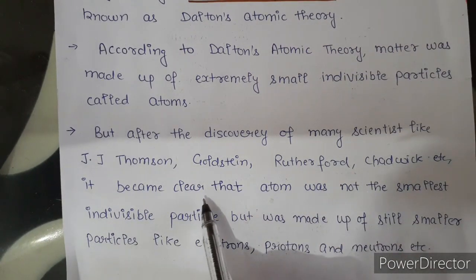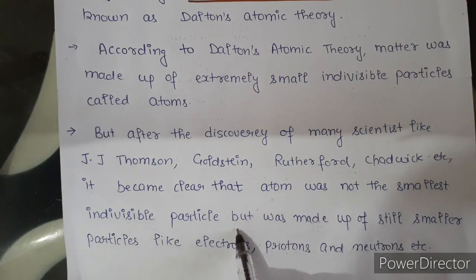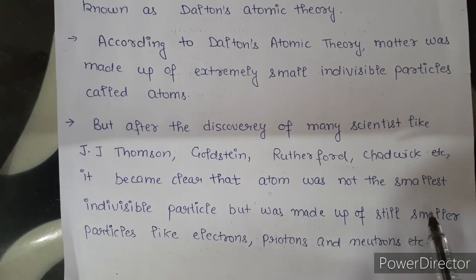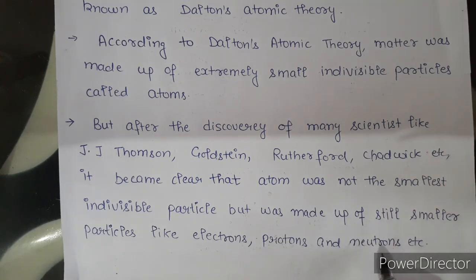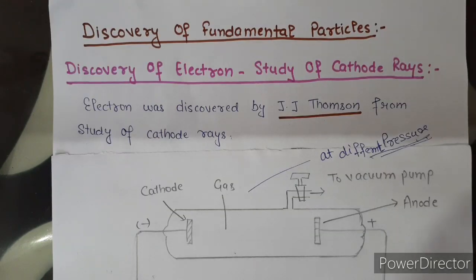After their discoveries, it became clear that the atom was not the smallest individual particle. It was made up of still smaller particles like electrons, protons and neutrons. At present, there are a total of 35 different sub-atomic particles. And electron, proton and neutron are the three main fundamental particles of the atom. So our first topic is the discovery of these fundamental particles.